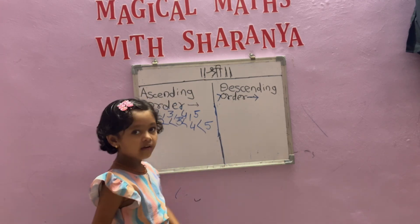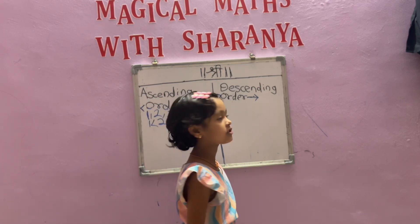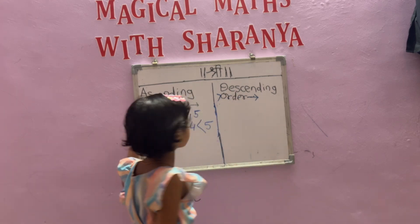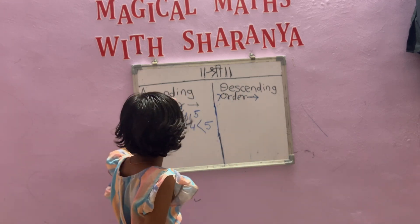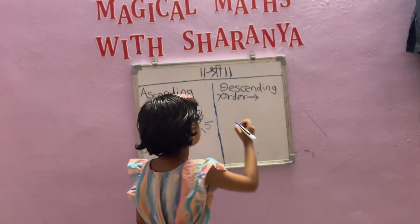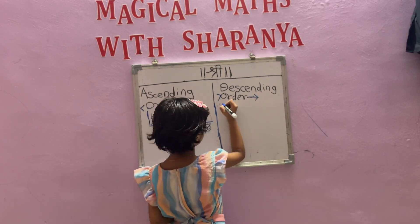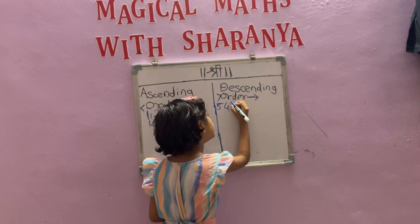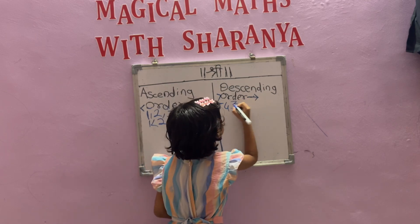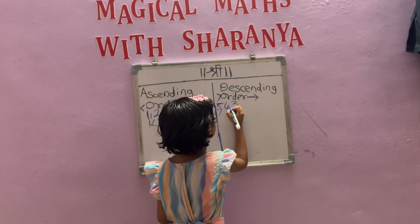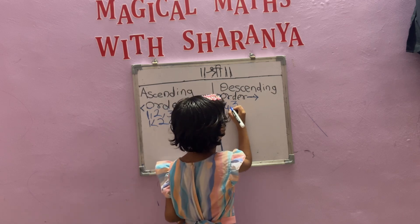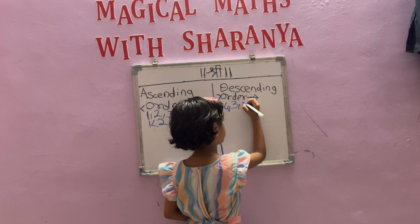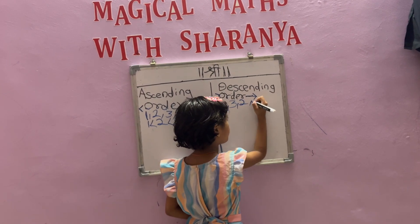Now I will write descending order examples. In ascending order there is one, two, three, four, five. Now in descending order there is five, four, three, two, one.